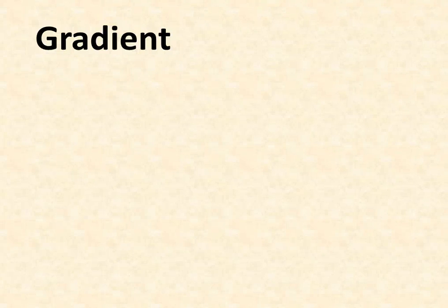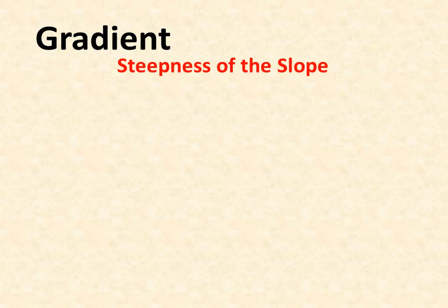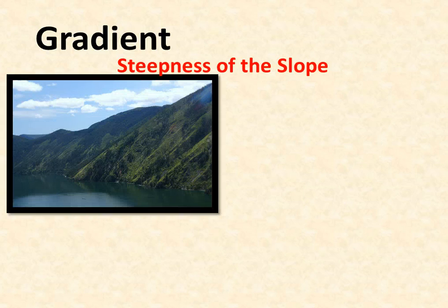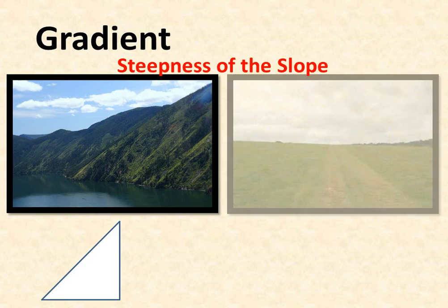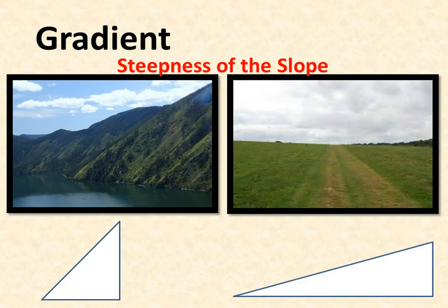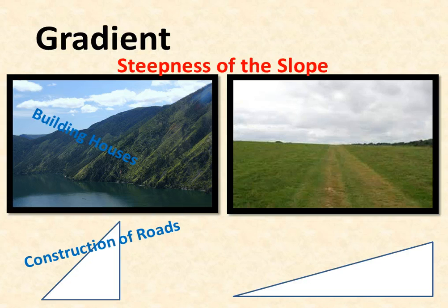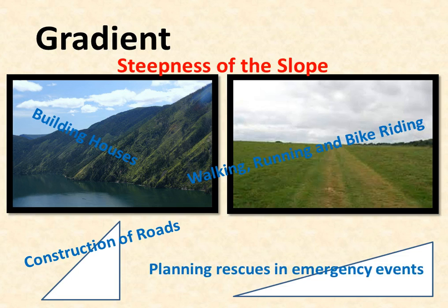This tutorial is all about gradient. Gradient is about determining the steepness of a slope. Some slopes are particularly steep, while other slopes are much more gentle. This can be relevant to us for a whole number of reasons. It can help us determine where we want to build houses, where we should construct roads, where we should plan bike tracks or routes for running and walking. It can also be useful for planning rescues during emergency events.